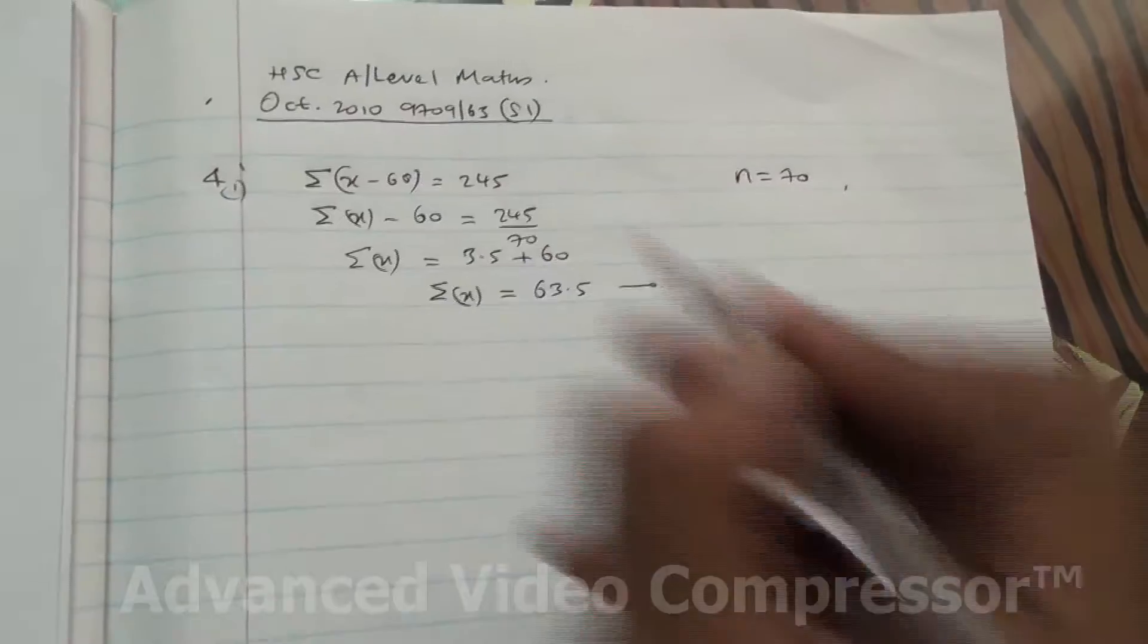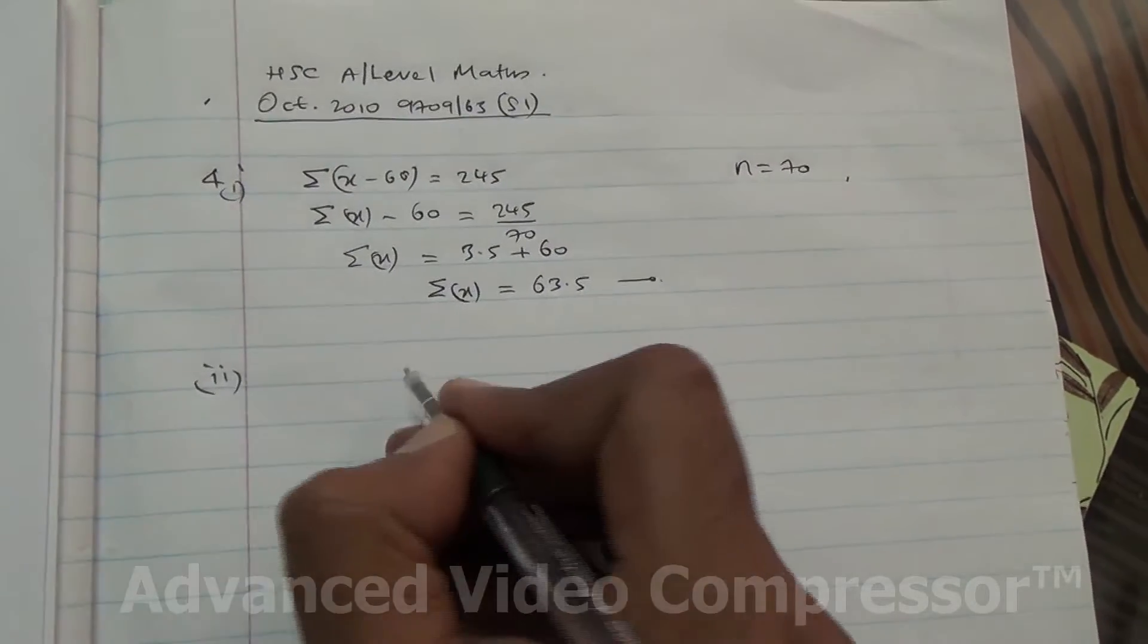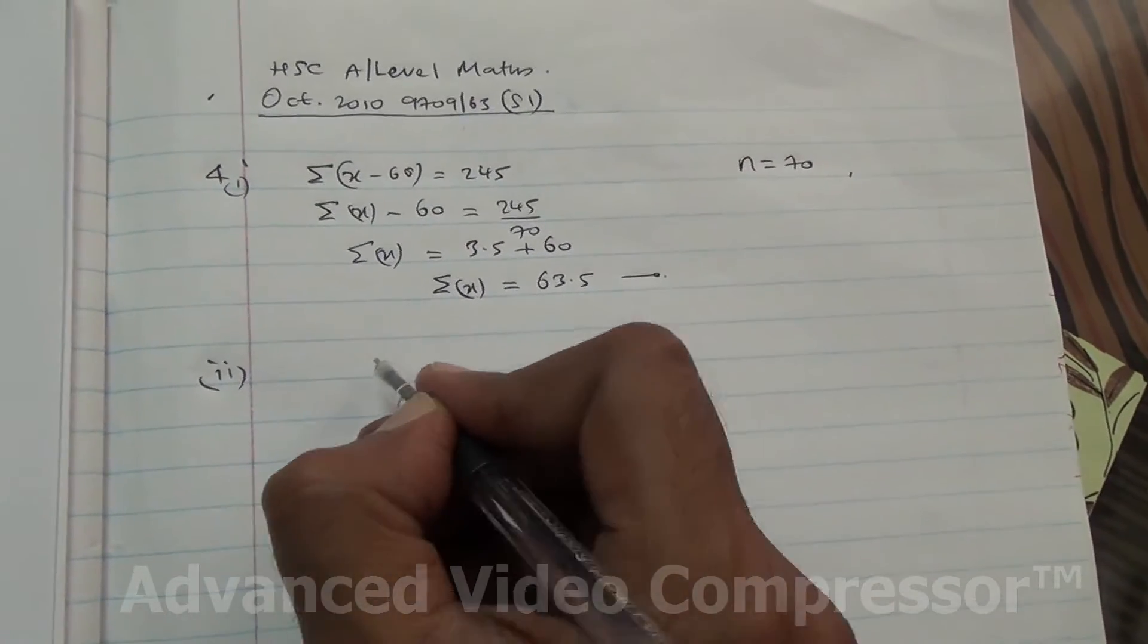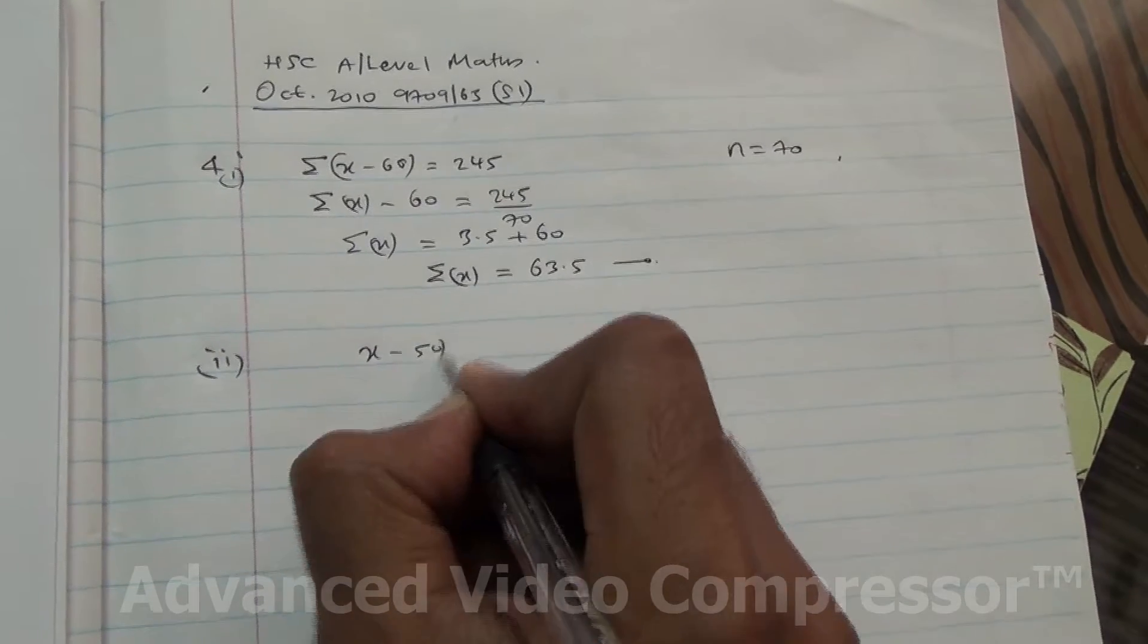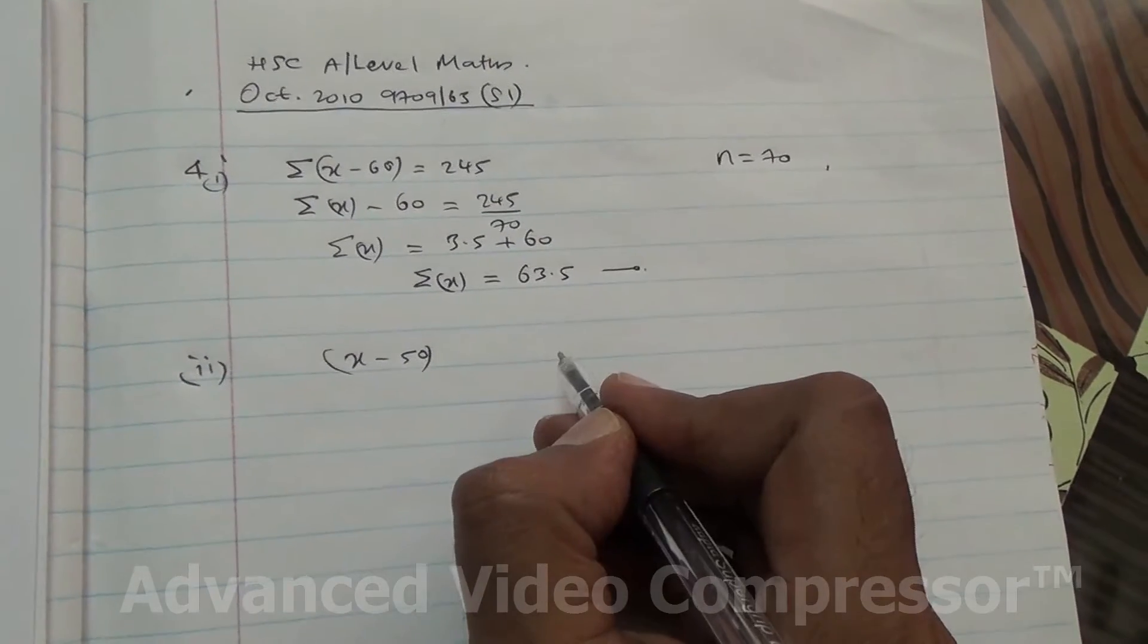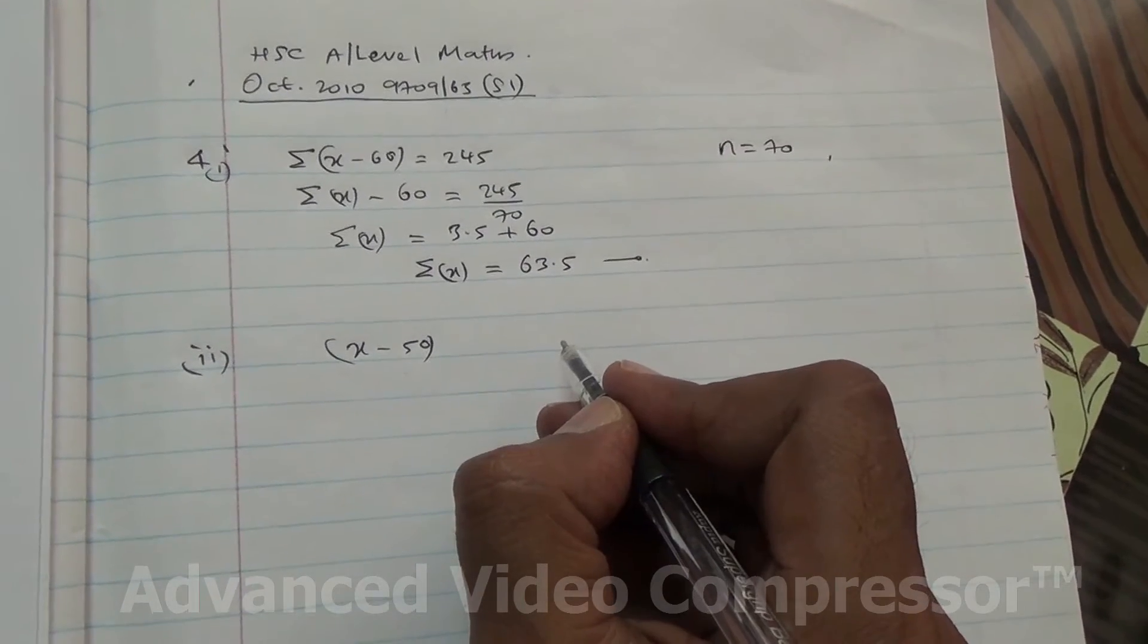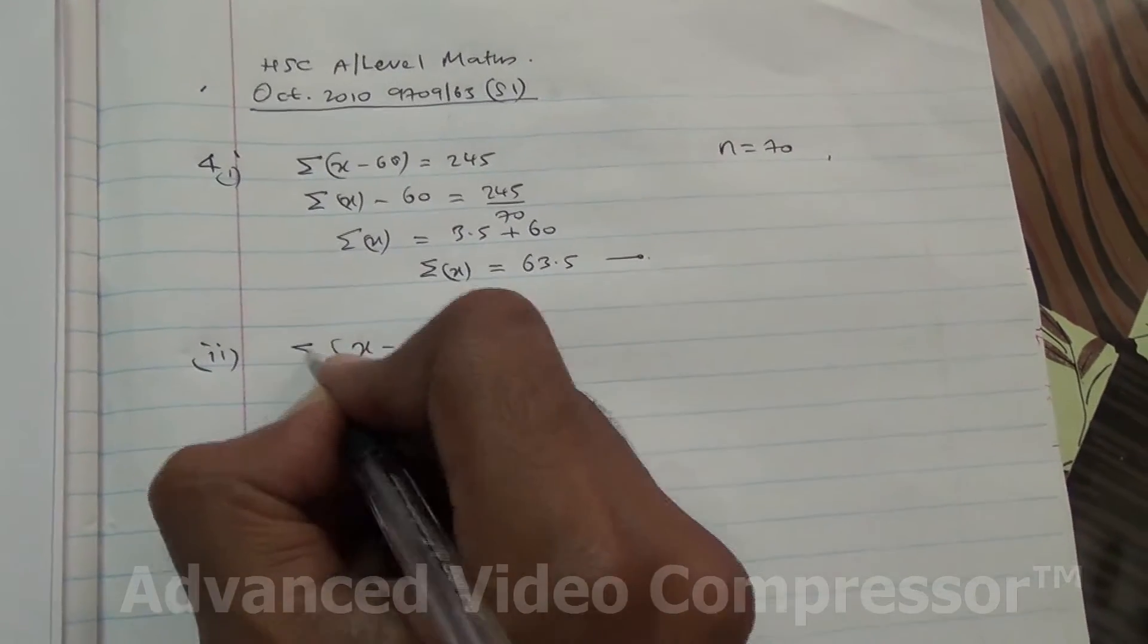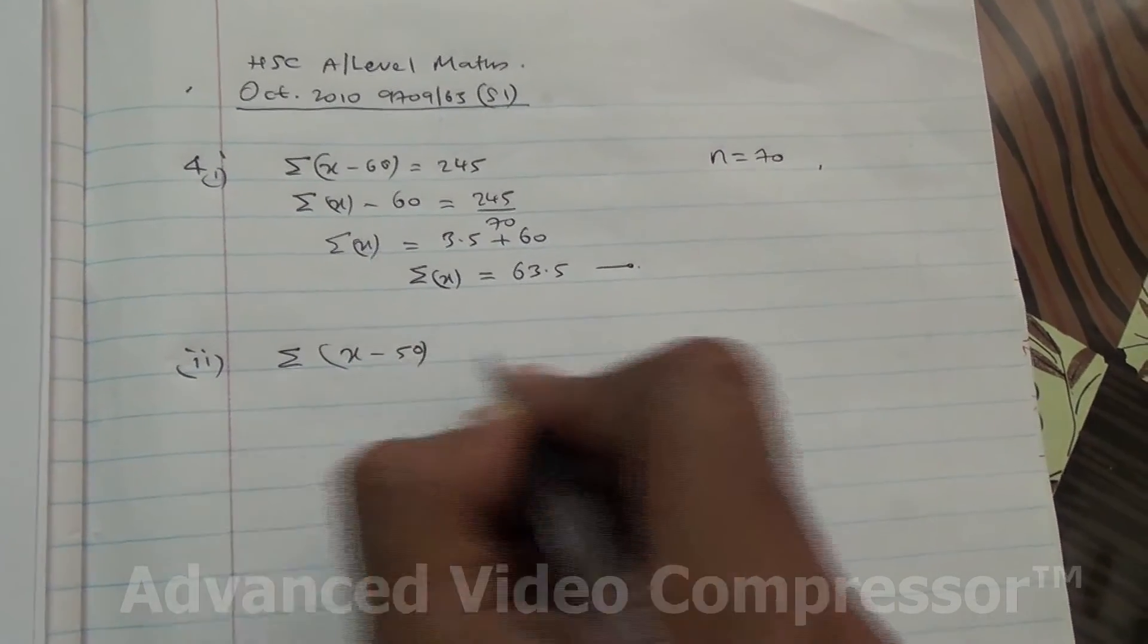Now for the second part. Sashim is using x minus 50. So we need to find out what is Σ(x minus 50).